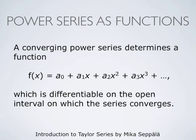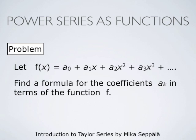Our goal is to represent a given function as the sum of a converging power series. In order to see how that can be done, we start conversely — with a power series that converges. If the power series a0 plus a1 times x plus a2 times x squared plus a3 times x cubed and so forth converges, then it defines a function f of x which is differentiable on the open interval on which this series converges. Our first problem is to find a formula for the coefficients ak in terms of this function f of x.